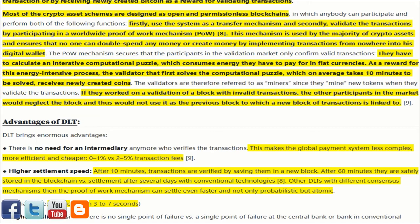The proof-of-work mechanism ensures that no one can double-spend money or create money from nowhere into their digital wallet. The POW mechanism secures that participants in the validation market only confirm valid transactions. They have to calculate an intuitive computational puzzle which consumes energy they pay for in fiat currencies. As a reward, the validator that first solves the puzzle — which on average takes 10 minutes — receives newly created coins. These validators are referred to as miners, since they mine new tokens when they validate transactions. If they worked on a block with invalid transactions, other participants would neglect that block.